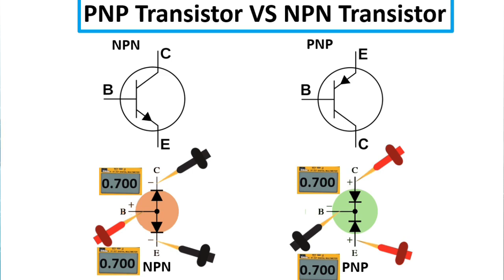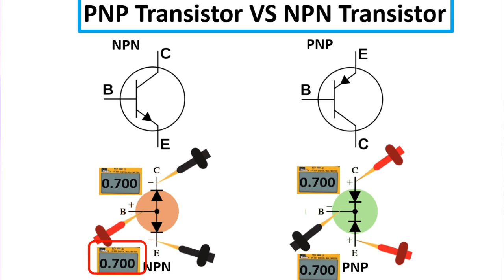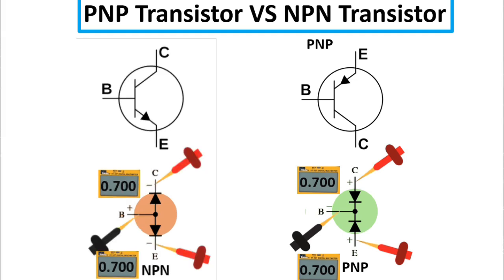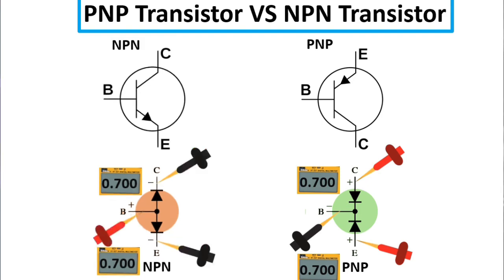To test the PNP transistor, put the red probe in the base and the black probe once in the collector and once in the emitter — you will get a reading between base and emitter and between base and collector. But if you swap and put the black probe in the base and the red probe in the collector and emitter, you will not get any reading.